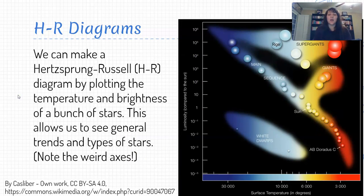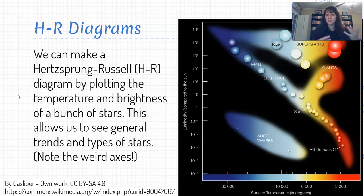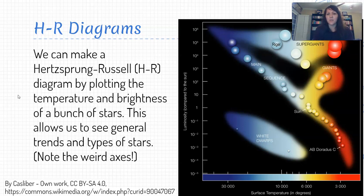As we measure data from different stars — looking at how bright they are and measuring their temperature based on color — we're able to start plotting out these different stars and seeing trends in terms of where our stars land in this brightness-to-temperature relationship. If we create that plot, what we're creating is something called a Hertzsprung-Russell, or HR, diagram.